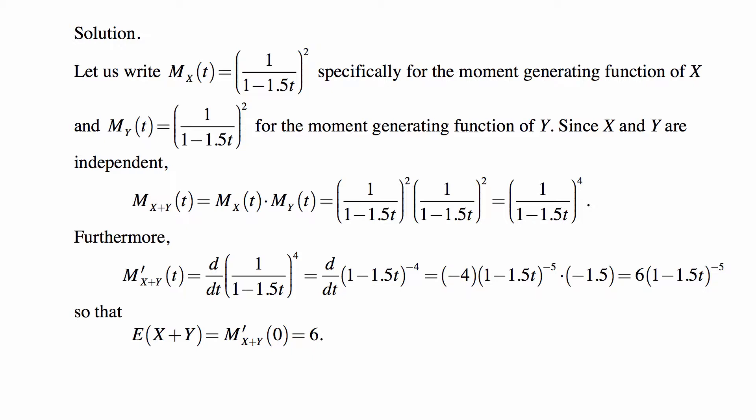And the first derivative of that MGF is, well, it's a derivative of (1-1.5t)^(-4). So it's -4 times (1-1.5t)^(-5) times -1.5, which is the derivative of the function inside. So this ends up being 6(1-1.5t)^(-5). And its value at 0 is the expected value of the sum X + Y. The first moment. The first moment is the expected value.